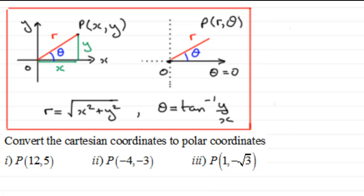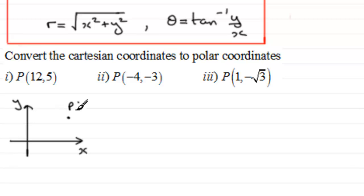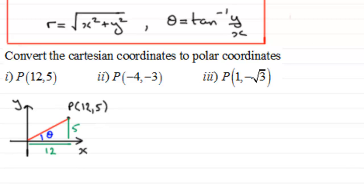Welcome back. Let's run through these. For point P with coordinates (12, 5), I'm going to quickly sketch this — we've got our y-axis and x-axis. For all these questions I would strongly recommend sketching the diagram. We've got point P at 12 across and 5 up. We need to find r — that length — and the angle theta.